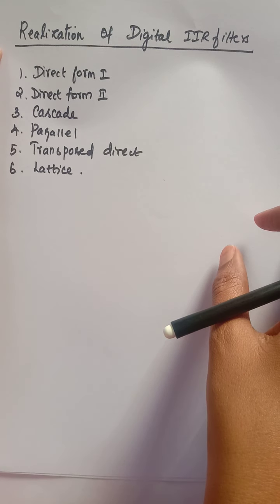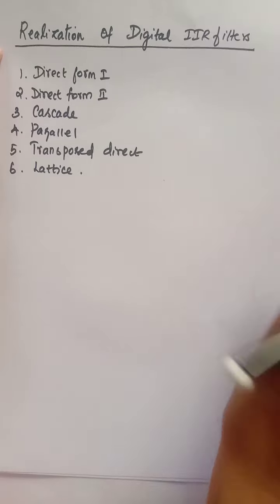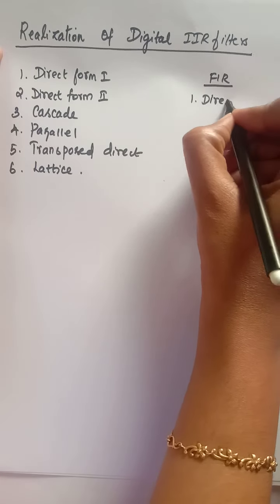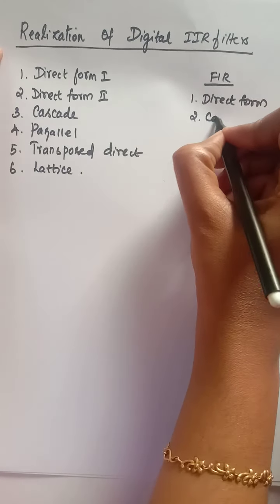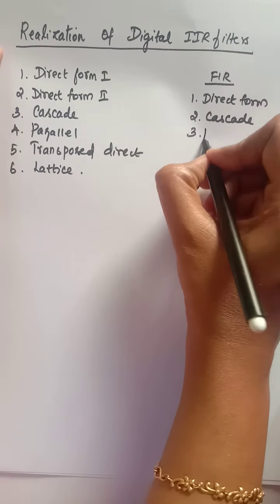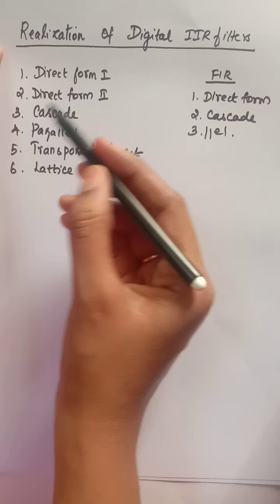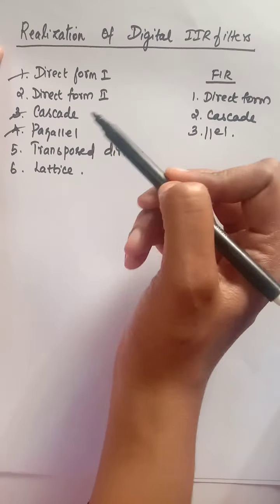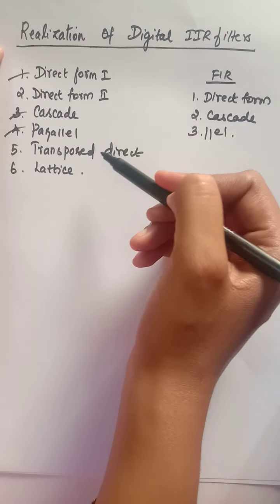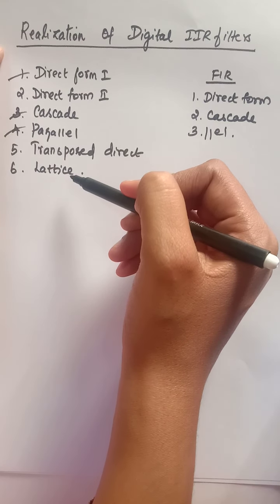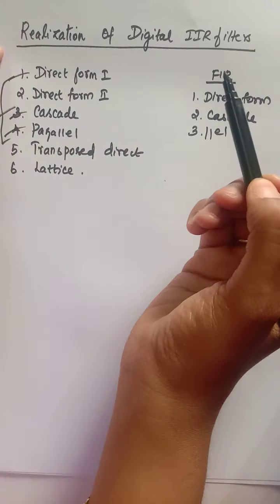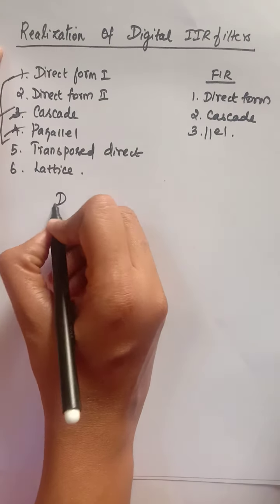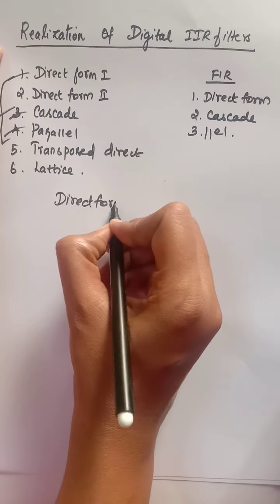In this video we are going to discuss the realization of digital IIR filters. In FIR filter realization we discussed three methods: direct form realization, cascade form realization, and parallel realization. Here we are going to see the similar concepts - direct form, cascade form, and parallel realization. In direct form there are two types: direct form one realization and direct form two realization.